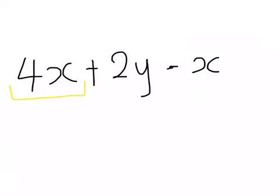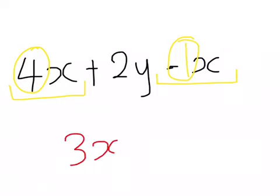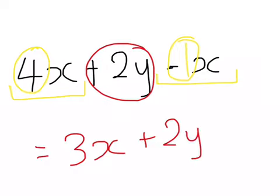Again, highlight or underline your like terms. 4x and -1x go together. So 4 - 1 gives me 3x, and then the only thing left over is +2y. So that's the simplified version.